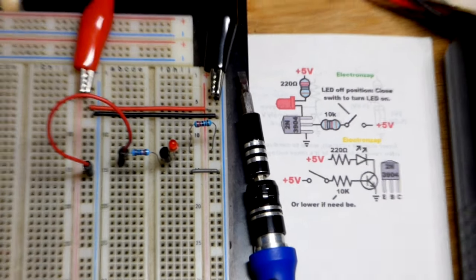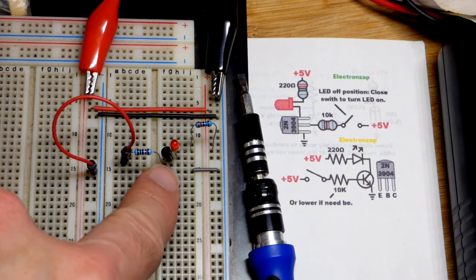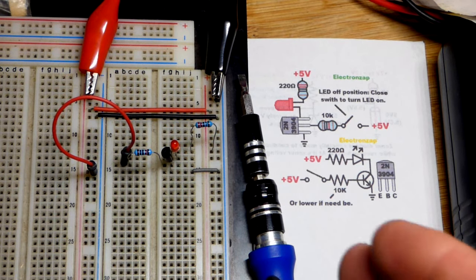So now in this video we're going to look at a demonstration circuit of using an NPN bipolar junction transistor as a switch.